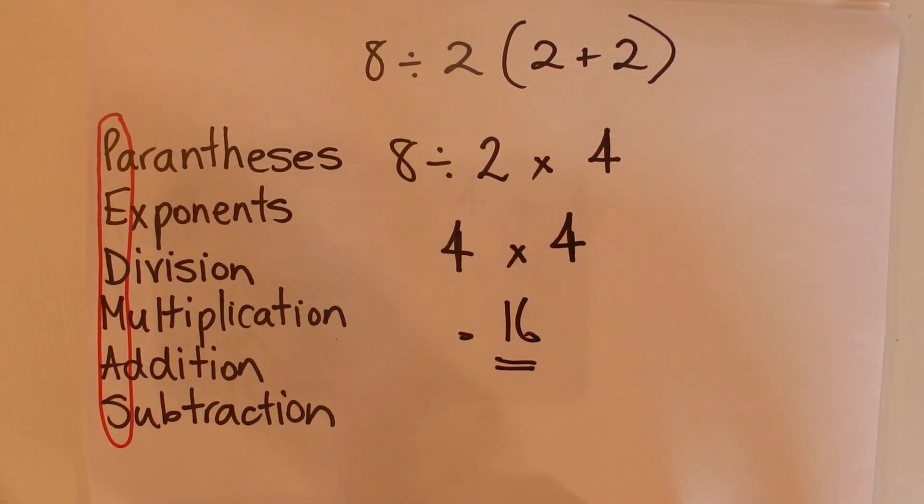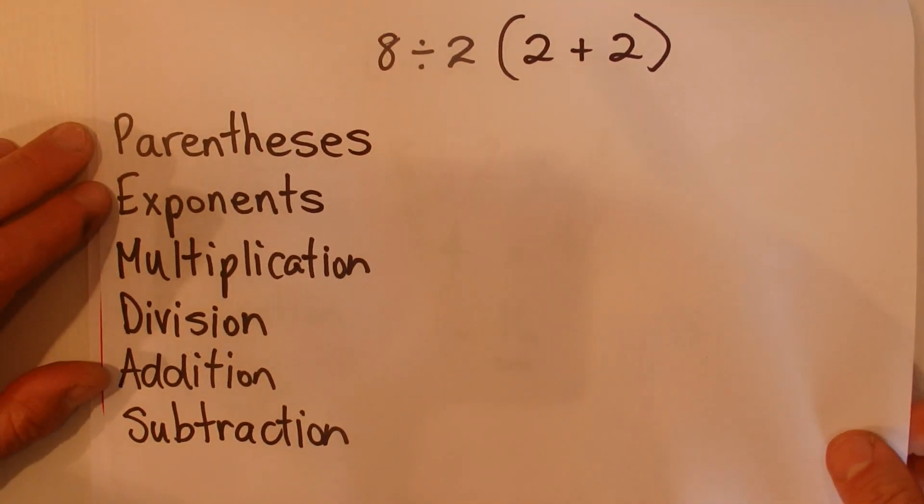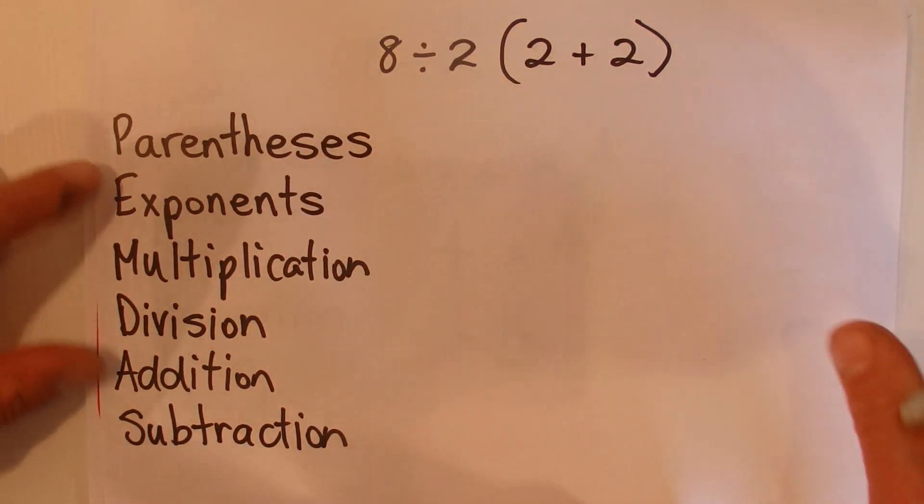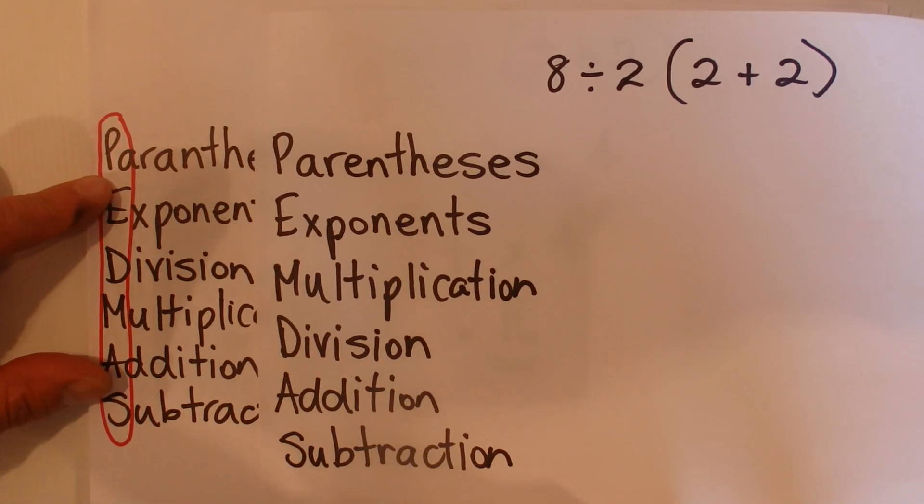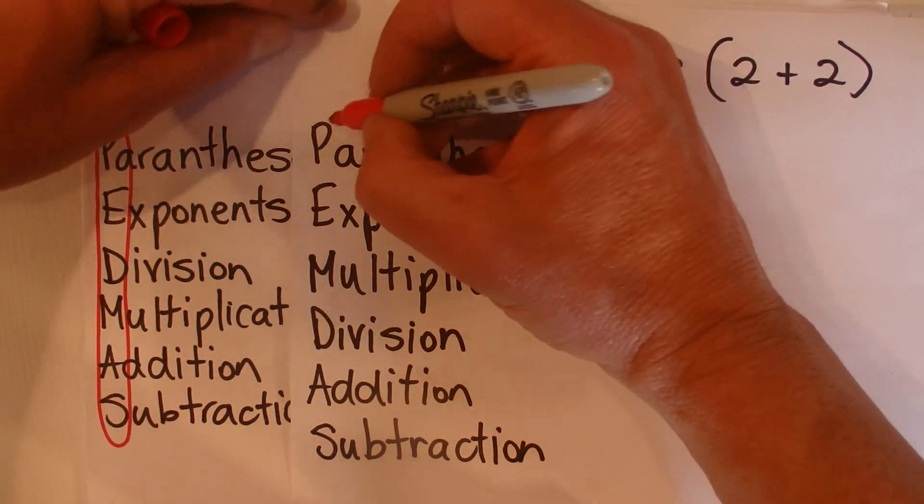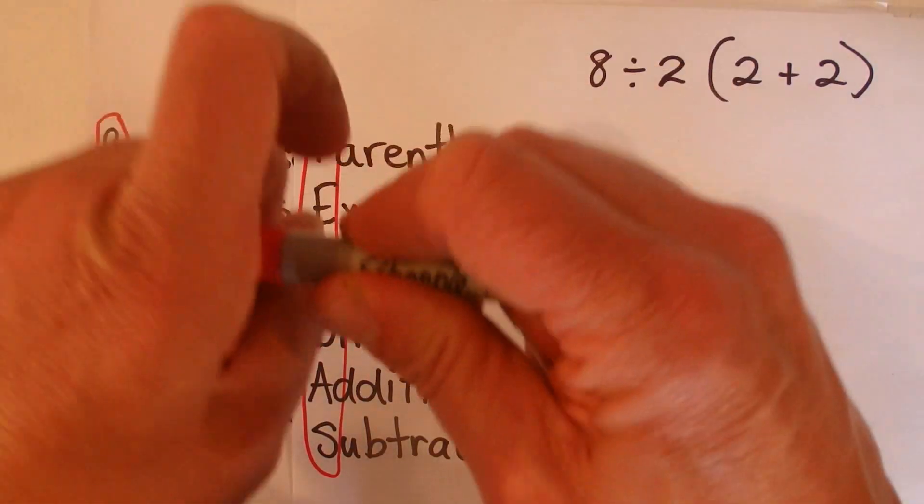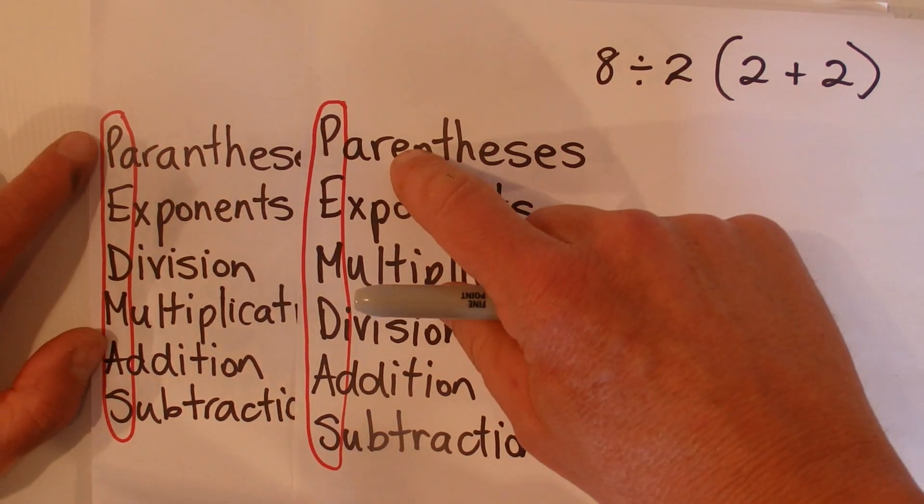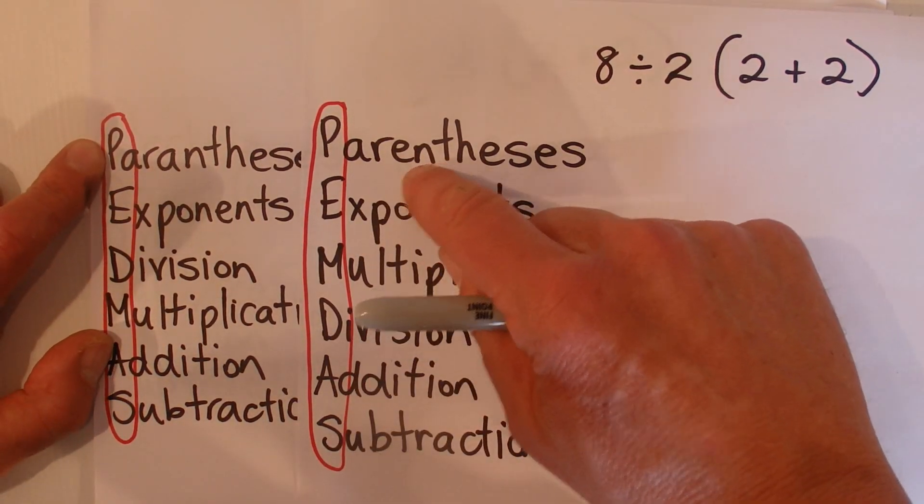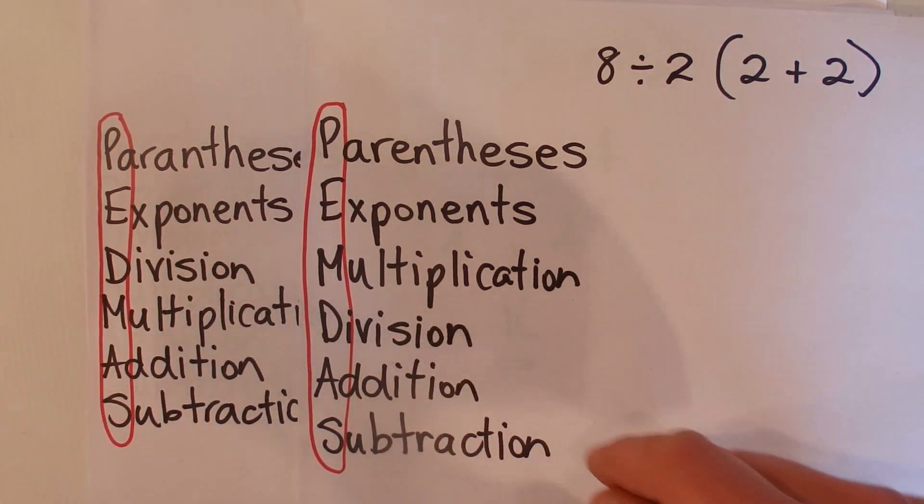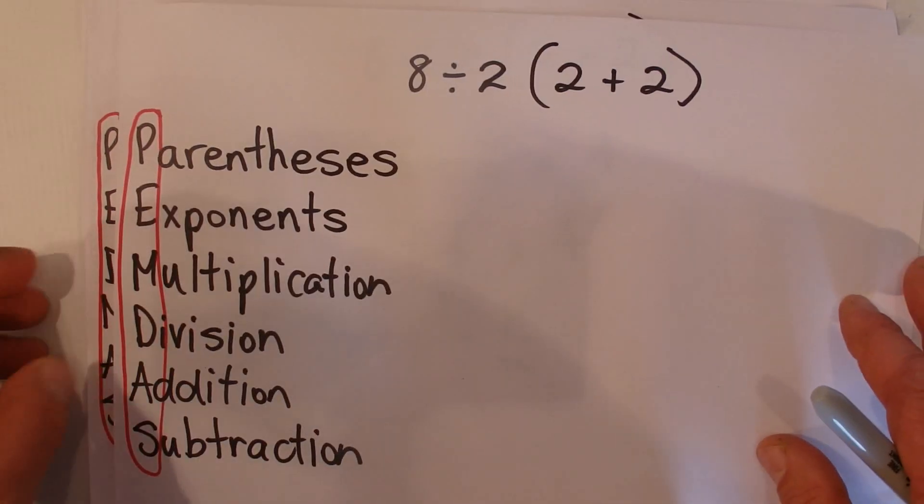But then I also came across another initialism which puts multiplication before division. You can see there that it's all the same—this is PEMDAS this time—but it tells you to do Parentheses, Exponents, and then Multiplication before Division. So if you use this initialism then...